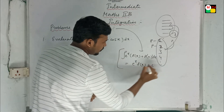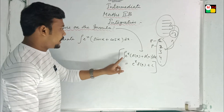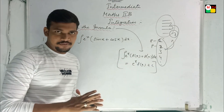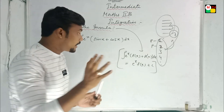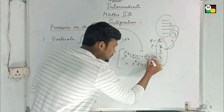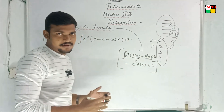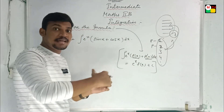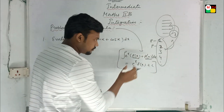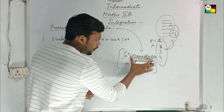This formula: integral e^x [f(x) + f'(x)] dx = e^x · f(x) + c. Here f(x) is the function, and if that function is given, the derivative f'(x) is what we identify. The momentum — that is, f'(x) — is the differentiation of f(x).